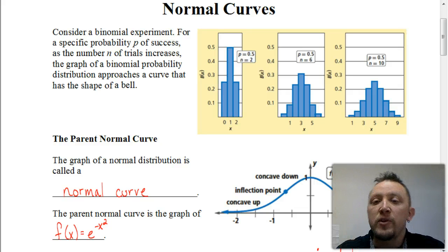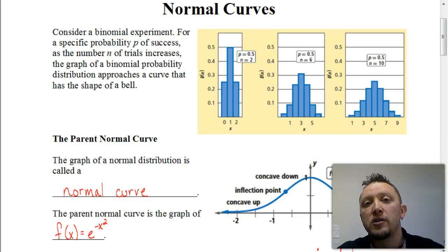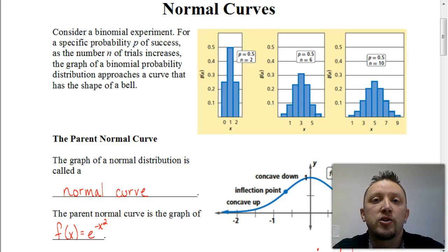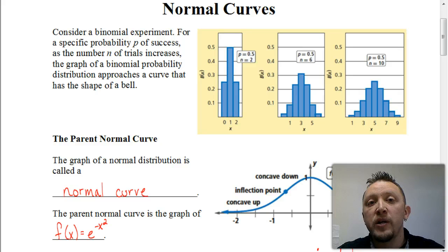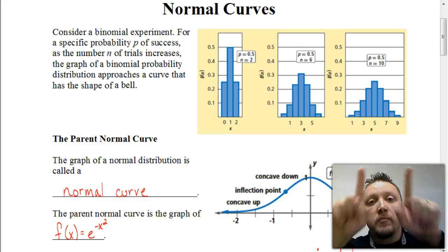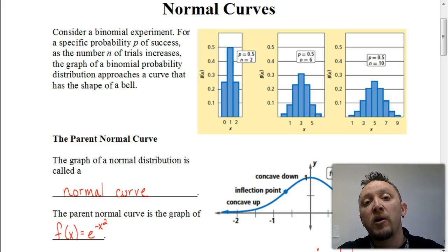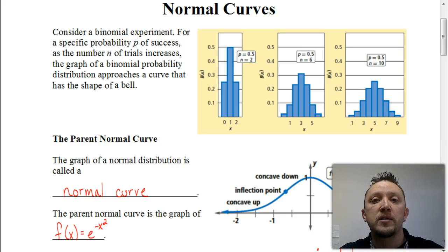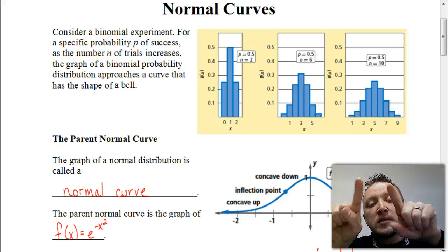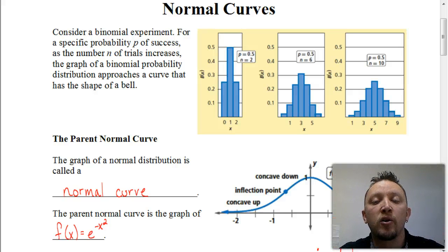In the last chapter, we saw graphs where we looked at a distribution of data. In these situations, we have the probability of a success being set constant as 0.5. When that happens, it's going to be symmetrical. These graphs illustrate that as the number of trials increases, the data becomes more of a bell-shaped curve, or what we call a normal curve.